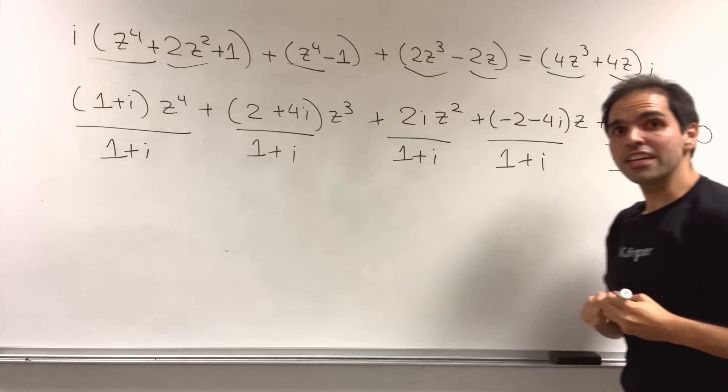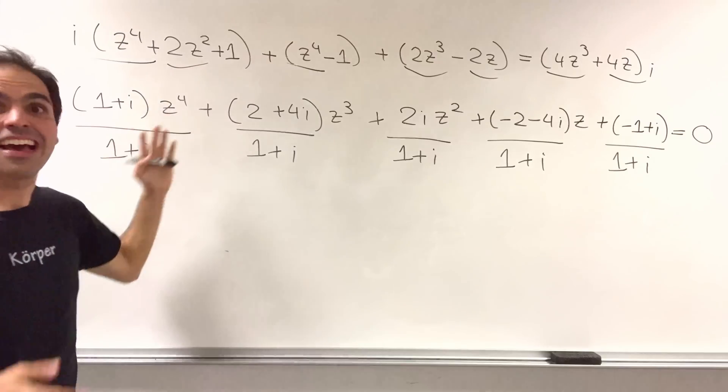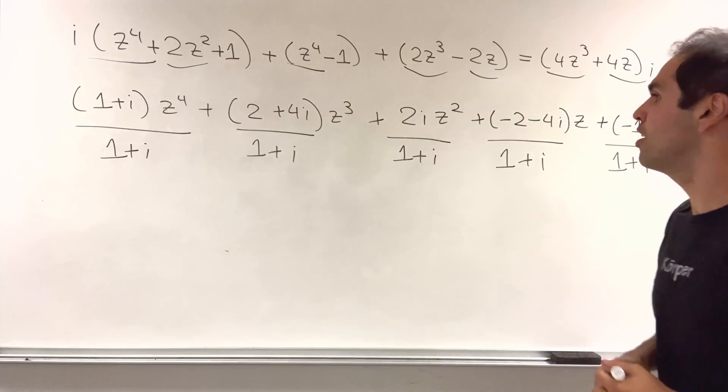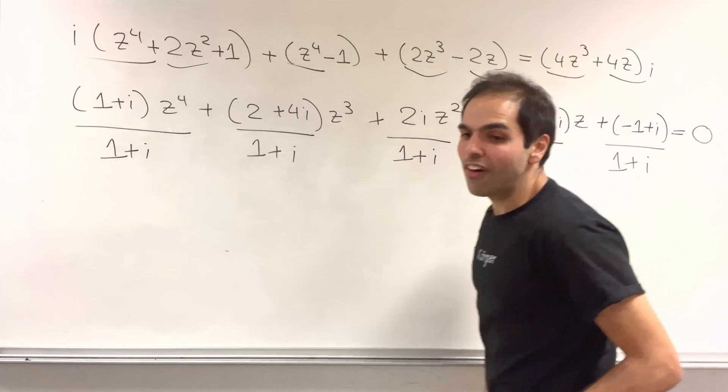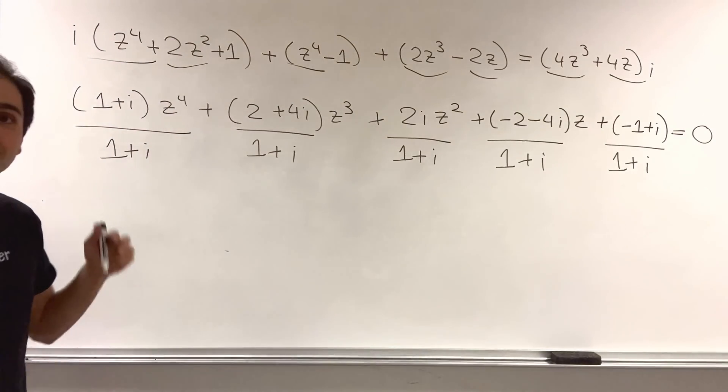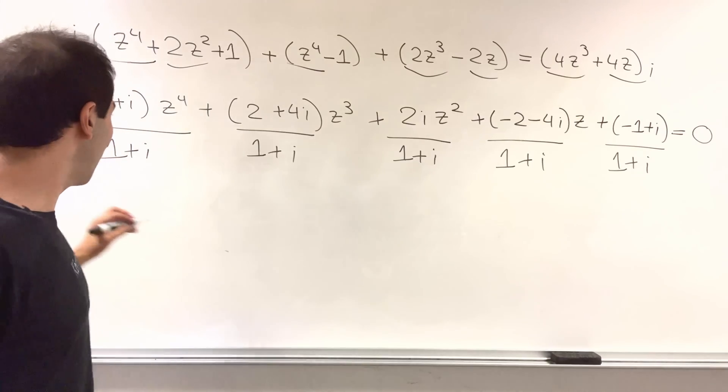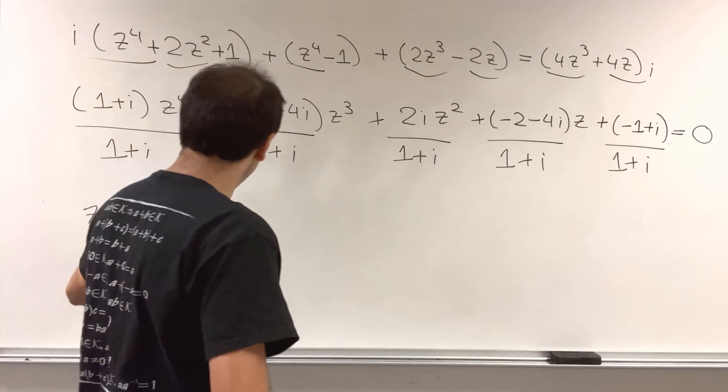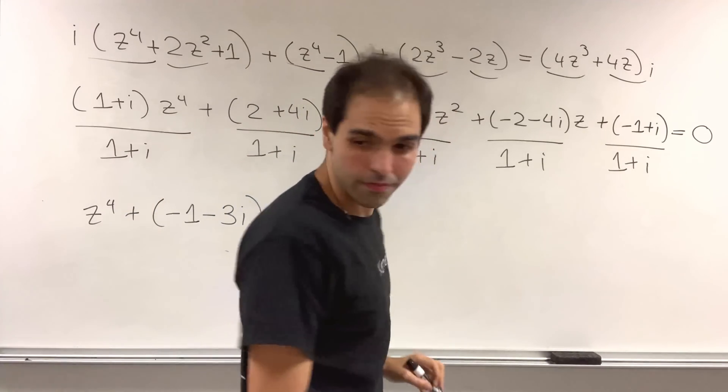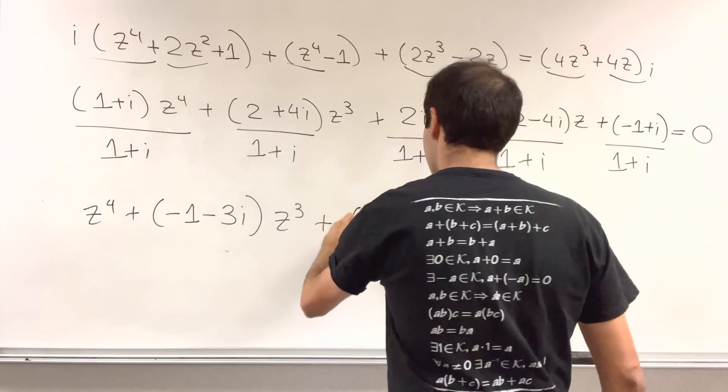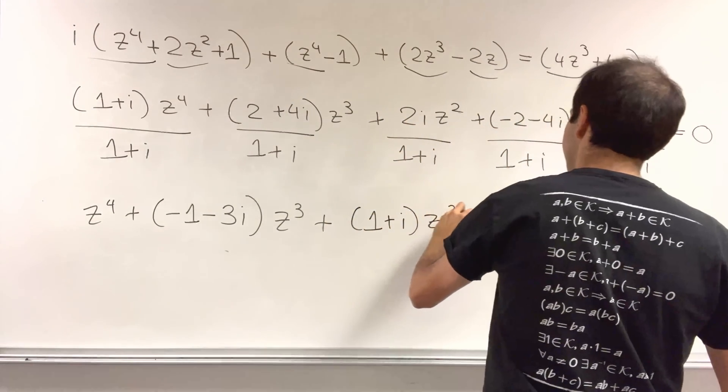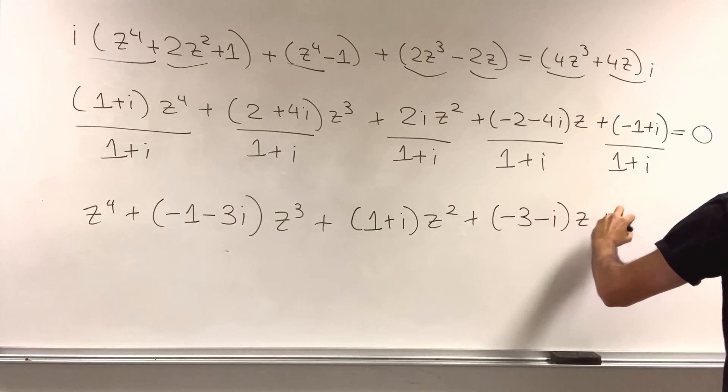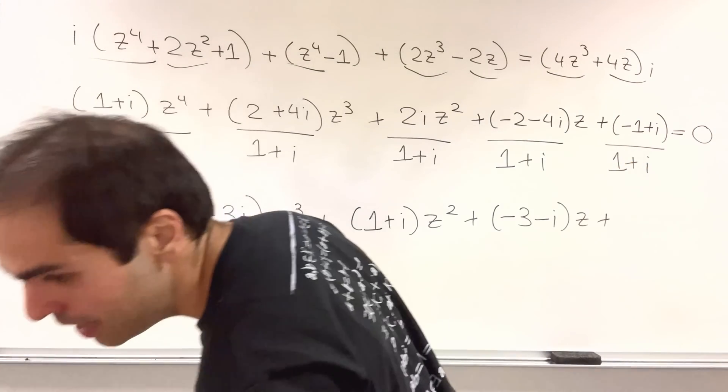Zero over one plus i is zero. And just like black pen, red pen says, I don't like to be on the bottom. So for all those other terms, multiply by one minus i and simplify this a little bit. But in any case, summa summarum, after all this work, we finally get the following polynomial: z to the fourth plus minus one minus three i z cubed, and then plus one plus i z squared, and then minus three minus i z, and finally, minus one plus i over one plus i, which I believe is just i.